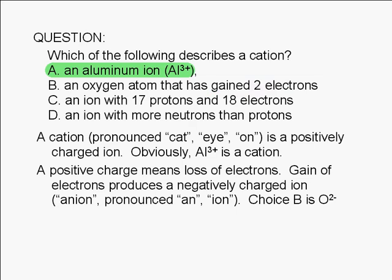How about choice C? If a cation is formed by the loss of electrons, then a cation must have more protons than electrons. In choice C, we have more electrons.